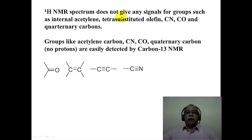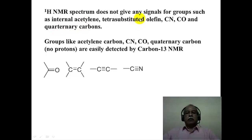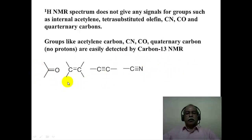A crucial difference between proton NMR and carbon-13 NMR is that in proton NMR one gets no signal for quaternary carbons, internal alkynes, tetrasubstituted olefins, cyano groups, and carbonyl groups — because these carbons bear no proton. In contrast, carbon-13 NMR gives direct evidence for all these functional groups: acetylenic carbons, cyano, carbonyl, and quaternary carbons are all directly detected, making carbon-13 spectroscopy far more informative for structural elucidation.